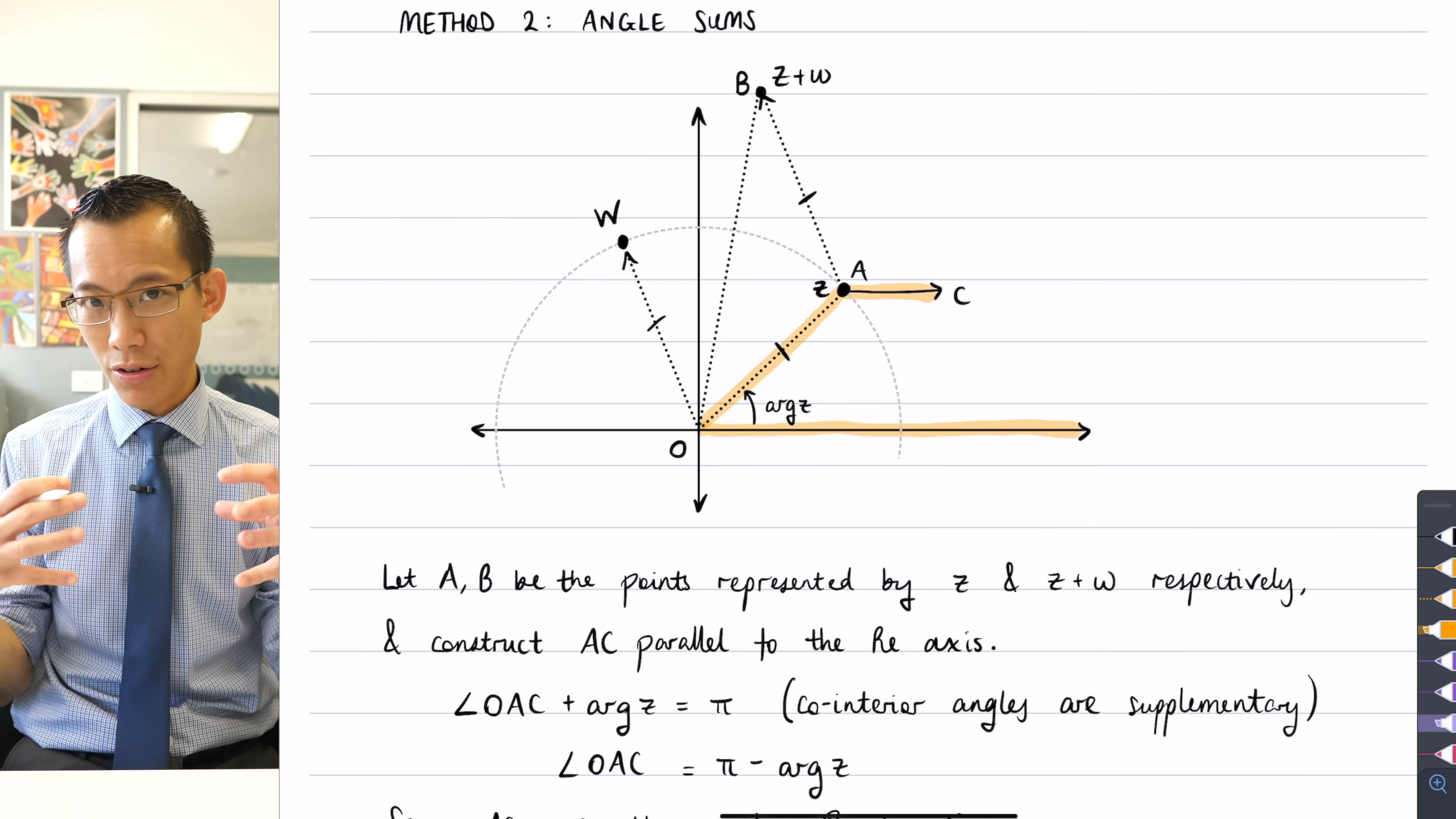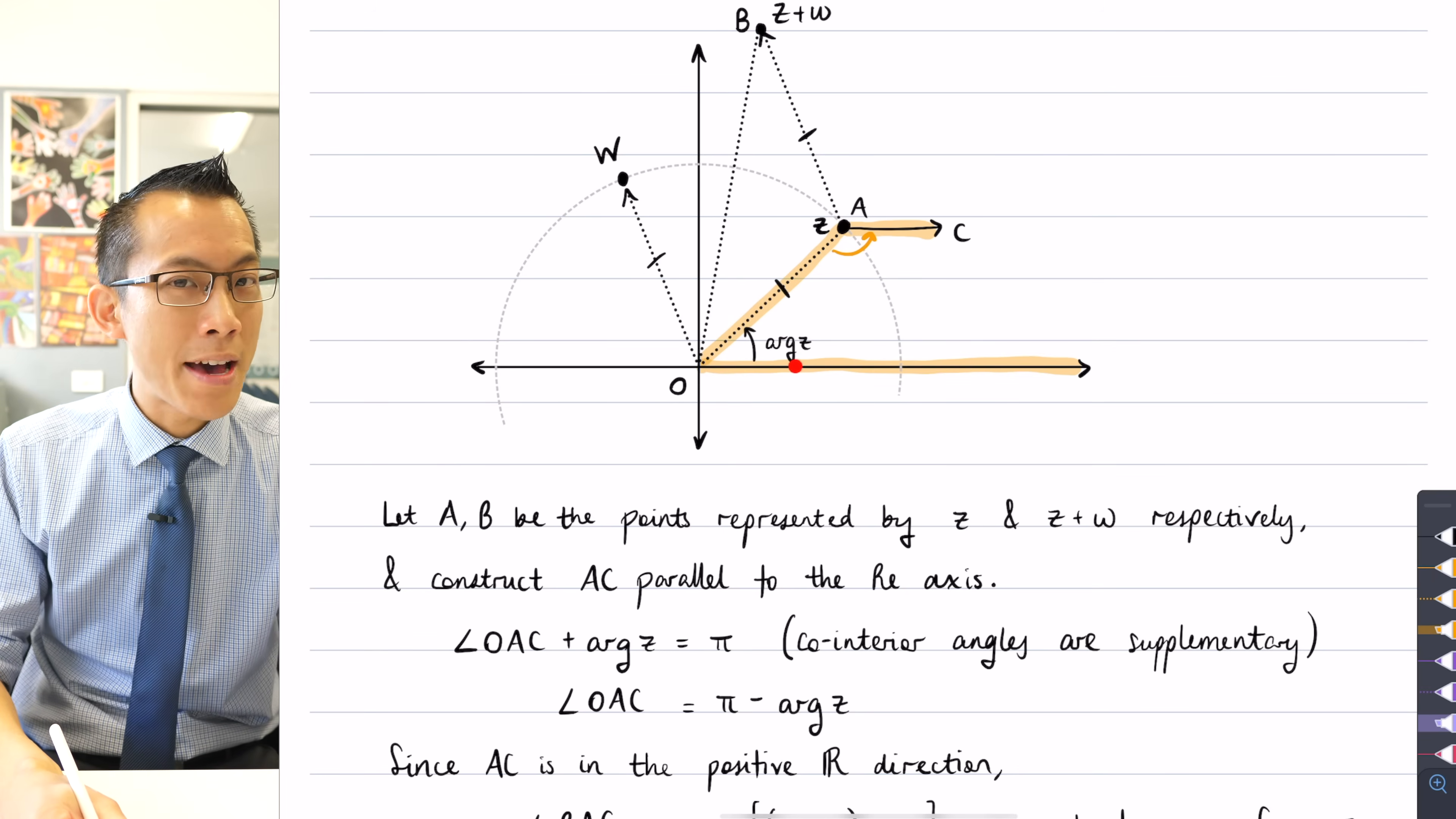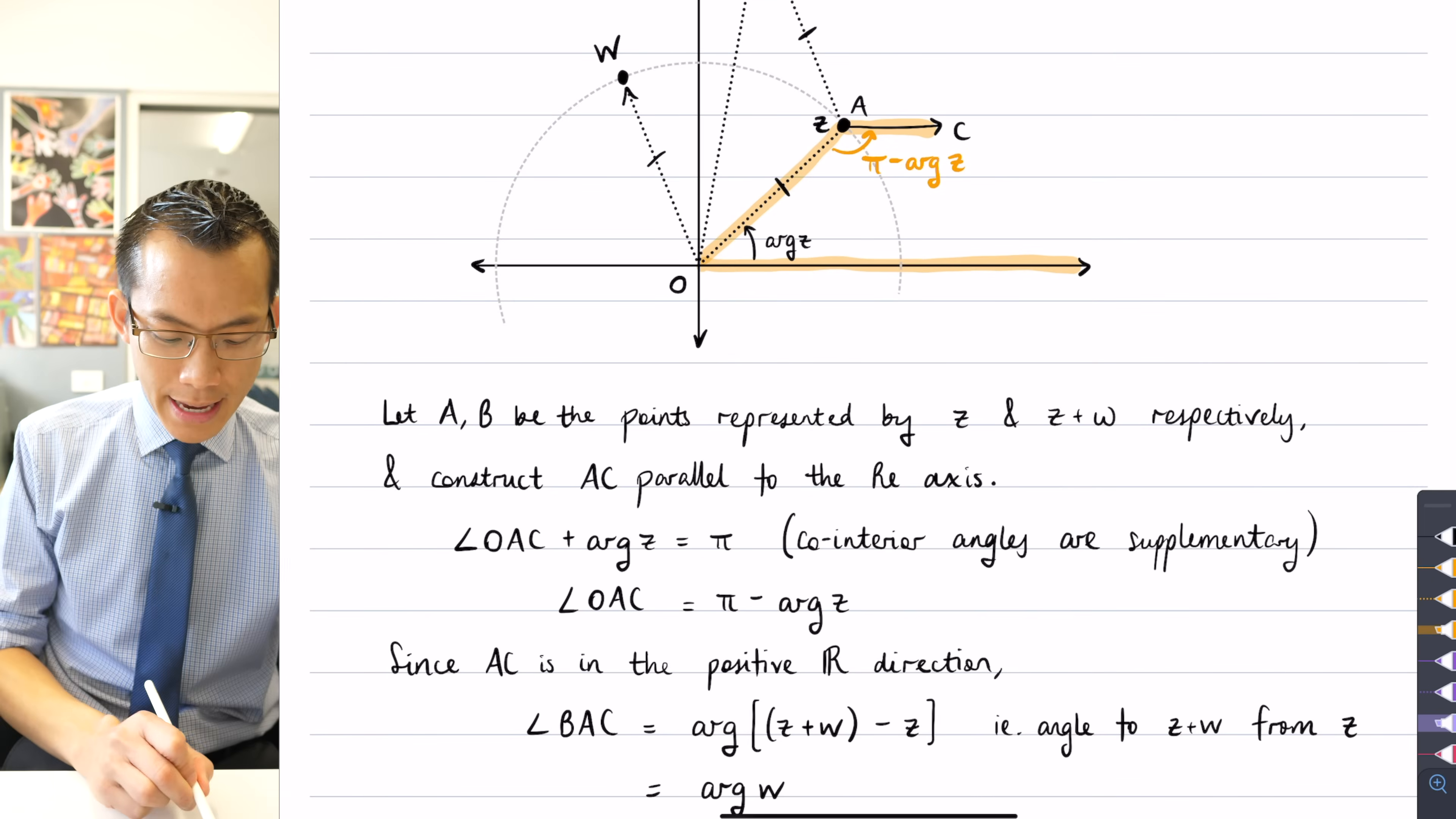Now, the reason why this is handy for me is because it gives me a pair of parallel lines. I've got a transversal here, OA, which gives me co-interior angles on the inside. If you have a look at my first line of working here underneath my constructions, OAC, which is in here. I'll just mark that in orange. There's angle OAC. That is co-interior to arg z over here. So that means they're supplementary. They add up to pi radians. So you can see that right there. Just rearranging to make OAC the subject. I've got OAC being pi take away arg z.